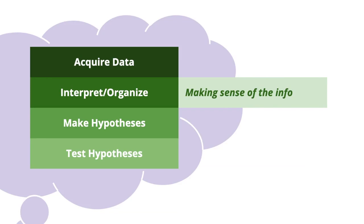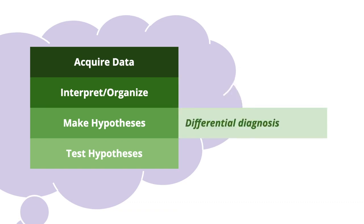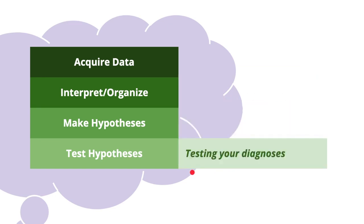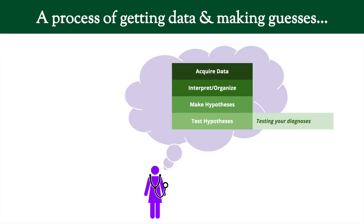Then you're going to take that information and make sense of it — you need to interpret and organize that data. After organizing the information, you need to start making some guesses about what you think the person has. A list of possible diagnoses, possible explanations for a disease, is called a differential diagnosis — these are all the things it could possibly be. Finally, you have to test that differential, testing every single diagnosis on your differential to determine how likely it is that the patient has it.